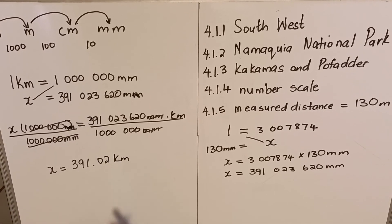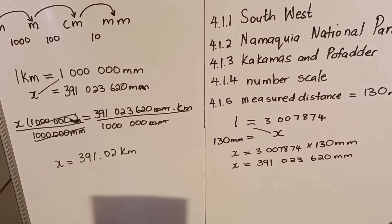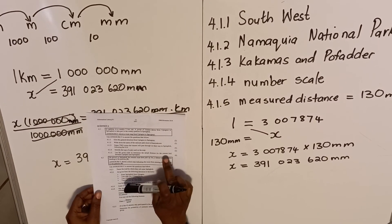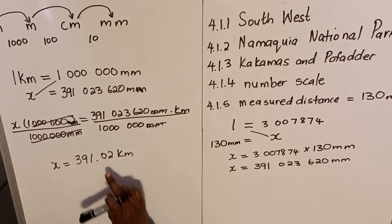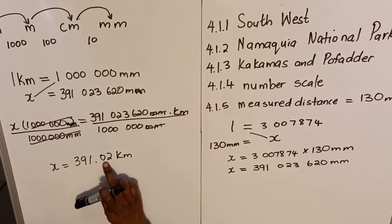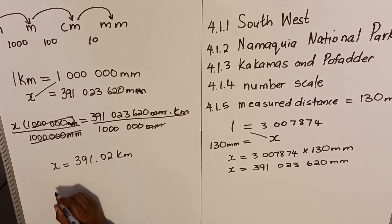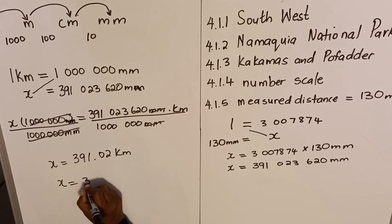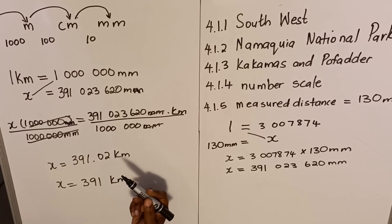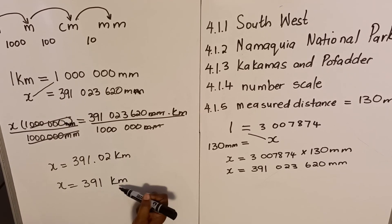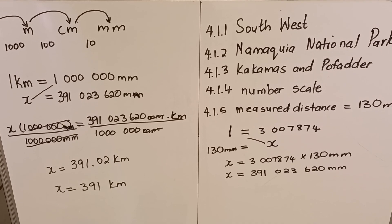Now re-read the question — it says round to the nearest kilometer. Check the decimal: 0.00002 is less than 5, so we don't round up. Therefore x = 391 kilometers. The actual distance from Uppington to Springbok is 391 kilometers as read from the map. Practice this and that is the end of our lesson.